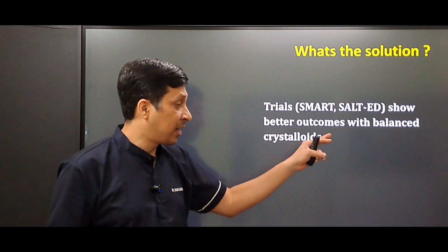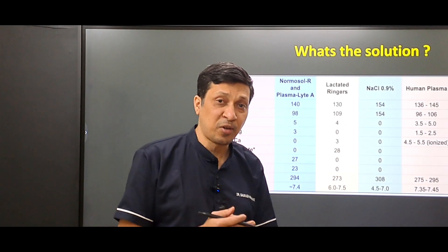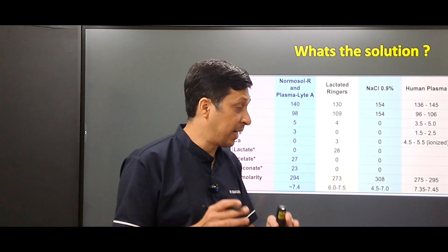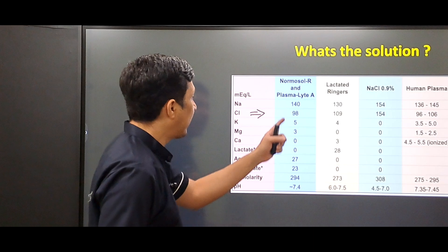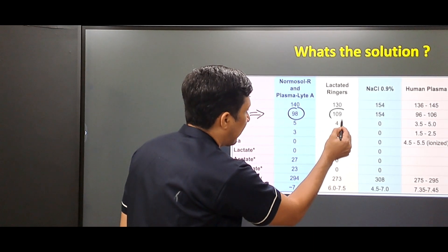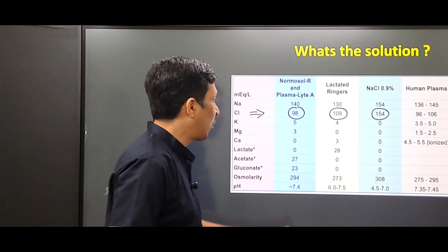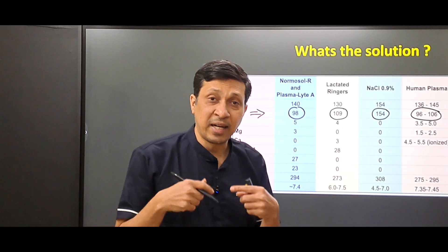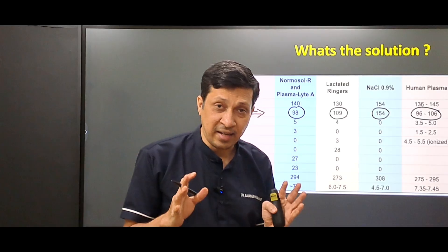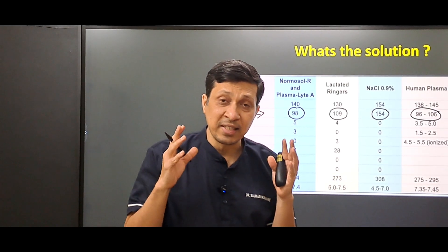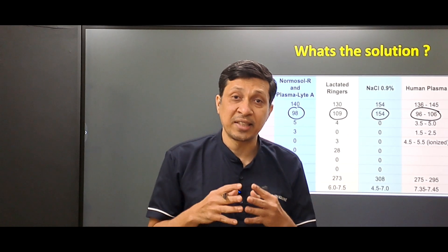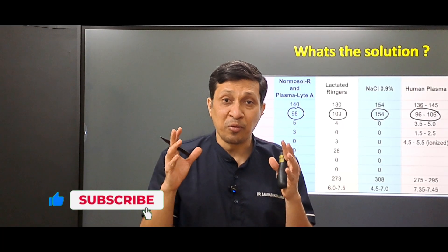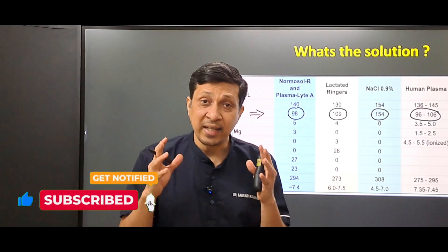So what is the solution? Trials like the SMART trial and SALT-ED trial have shown that when large volume resuscitation is required, there are better outcomes with balanced crystalloids. For example, PlasmaLyte has chloride of 98 and Ringer's Lactate has chloride of 109, compared to 154 in normal saline — equivalent to plasma levels. Balanced crystalloids also contain other electrolytes like potassium, magnesium, and calcium, and they contain various buffers that prevent acidosis during large volume resuscitation.